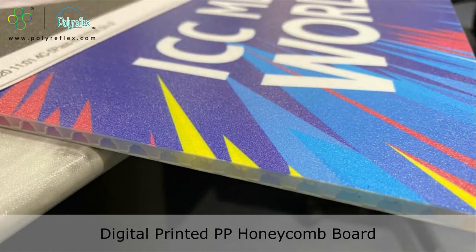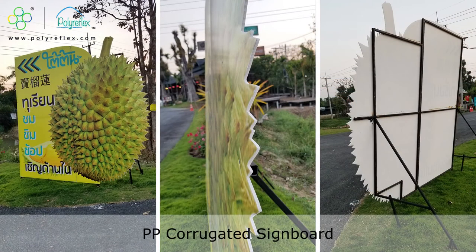Both PP honeycomb panels and PP corrugated sheets are ideal materials for printing signboards. PP corrugated board used for printing also needs to be Corona treated. Their printing methods are mainly digital printing and silk screen printing.